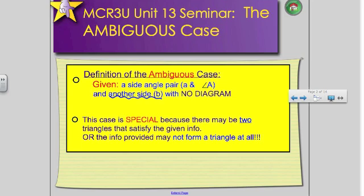So, the ambiguous case is special because there may be two triangles that satisfy the given information. You can have two triangles up to two triangles or the information provided may not form a triangle at all. You might have a situation where there's no solution because no triangle can be formed. So, it's easy to say all of this but a different thing to visualize it.